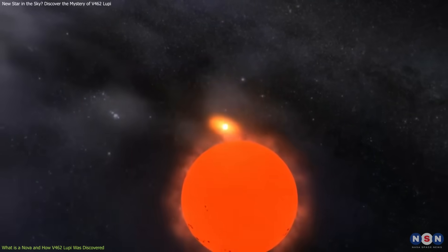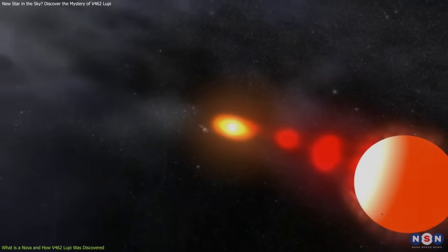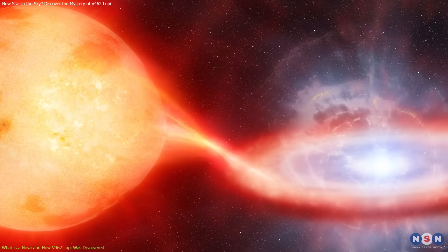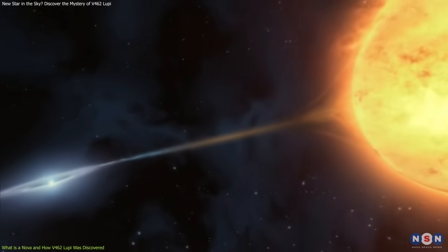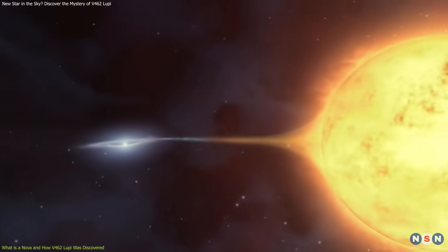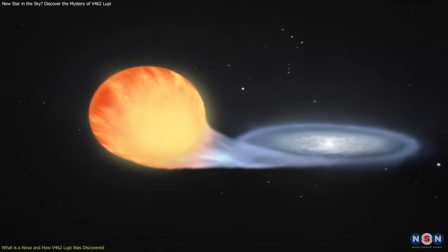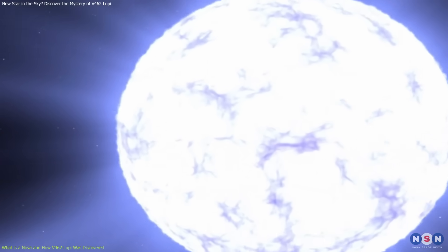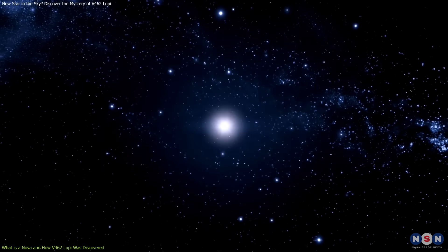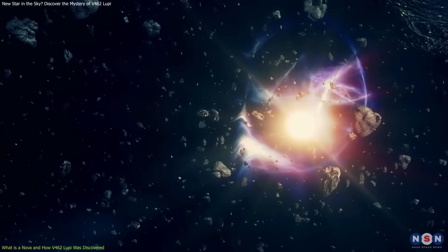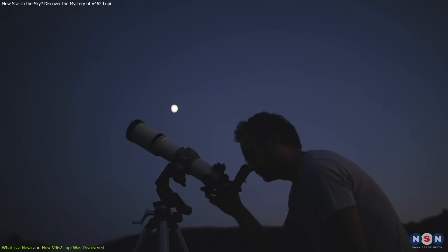A nova occurs in a binary star system where a white dwarf, the dense remnant of a star, pulls material from a companion star. This process happens over time as hydrogen accumulates on the white dwarf's surface. When the pressure of this material becomes too great, it triggers a thermonuclear explosion, causing the star to brighten dramatically, sometimes hundreds or thousands of times brighter than usual. This increase in luminosity is what makes novae so noticeable and sometimes visible to the naked eye.